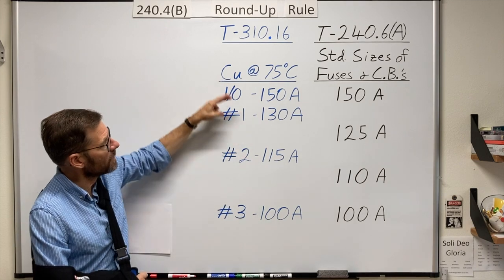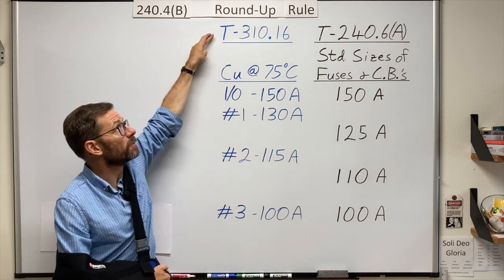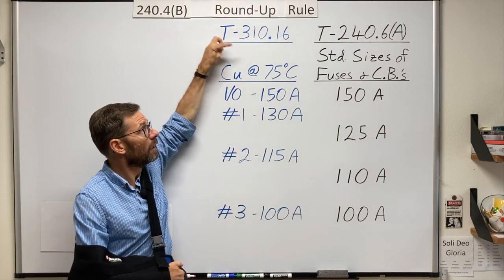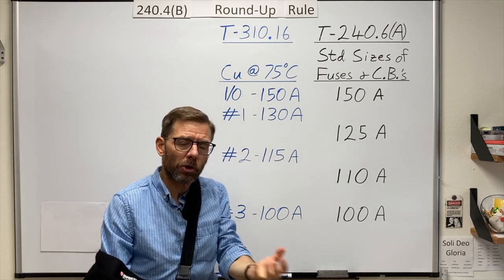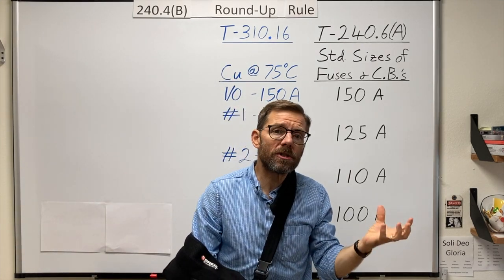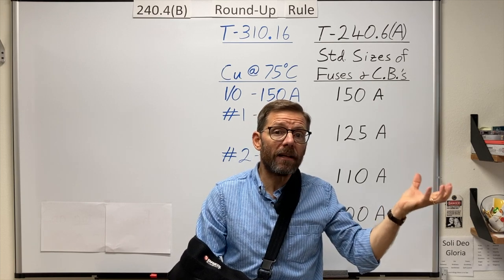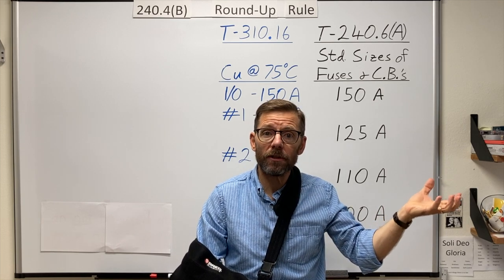Here I have some ampacities of copper conductors from Table 310.16, and I pick the 75 degree Celsius rating because in our commercial and industrial work, most of our newer equipment is rated for at least 75 degrees.